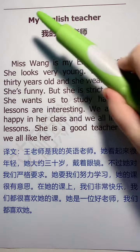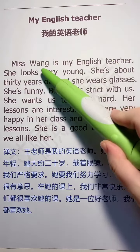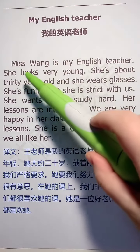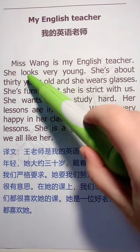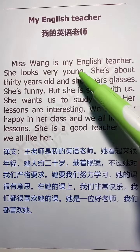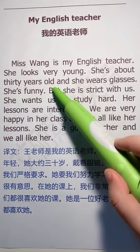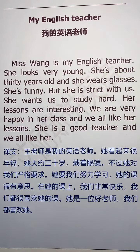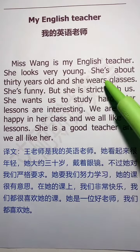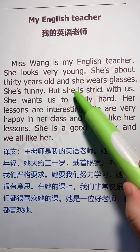今天我们来学习篇作文 My English Teacher，我的英语老师。Miss Wang is my English teacher，王老师是我的英语老师。She looks very young，look 在这里翻译过来是「看起来」，它是一个感官动词，意思是看起来非常年轻。She's about thirty years old，about 是「大约」，她今年大约三十岁了。And she wears glasses，而且她还戴着眼镜。She's funny，她是非常有趣的。